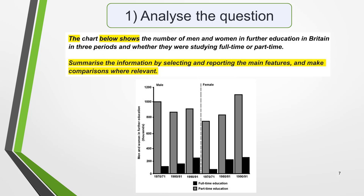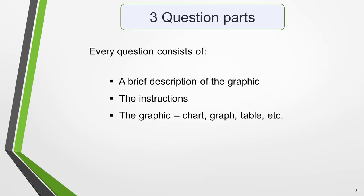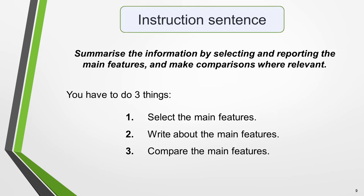Summarise the information by selecting and reporting the main features, and make comparisons where relevant. Every question consists of a brief description of the graphic, the instructions and the graphic itself — be it a chart, graph, table, etc. To find out what you have to do, you need to look at the instruction sentence. It will be the same for every question and every type of graphic. It reads: summarise the information by selecting and reporting the main features, and make comparisons where relevant.